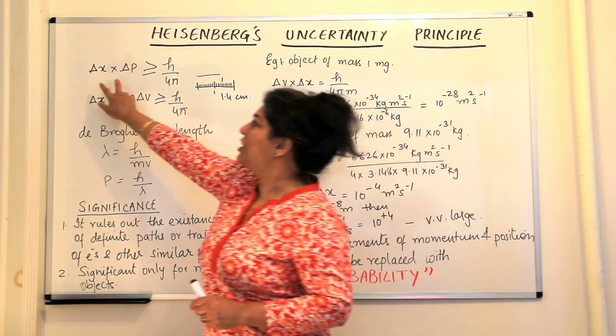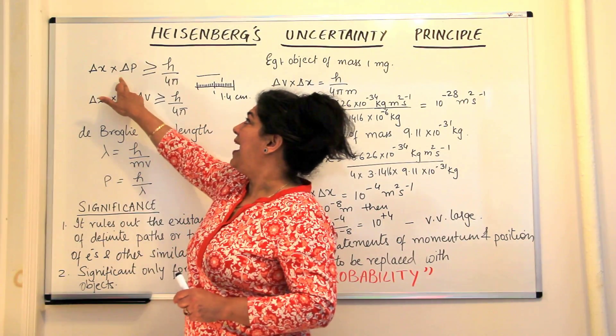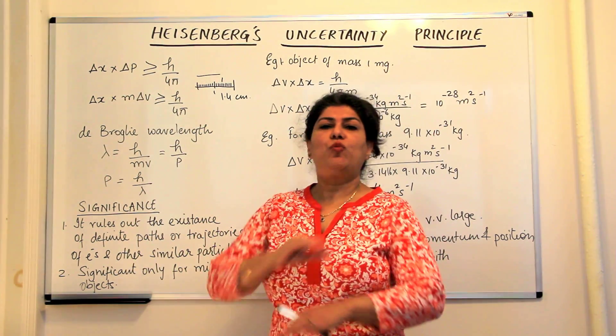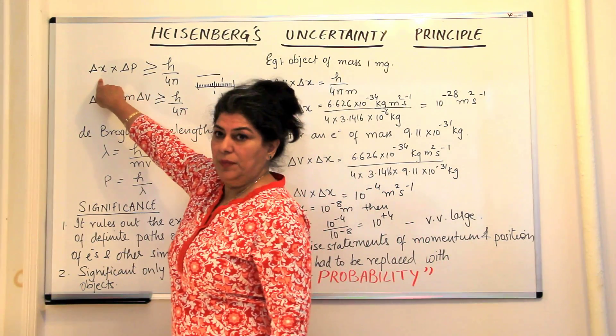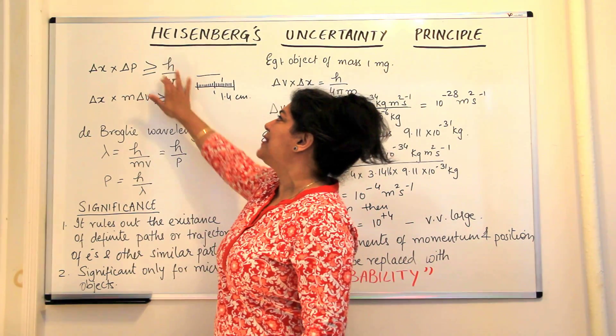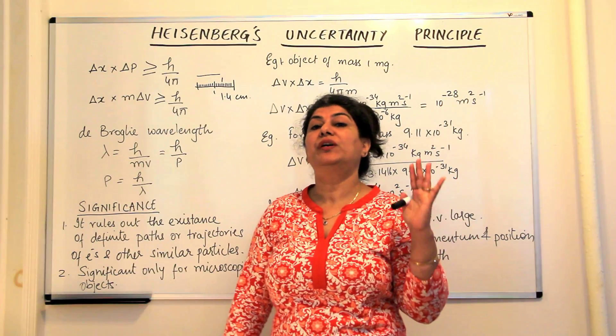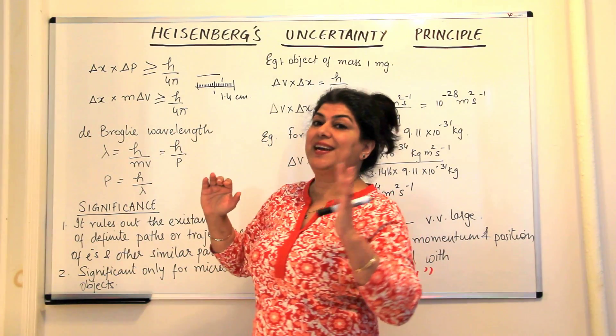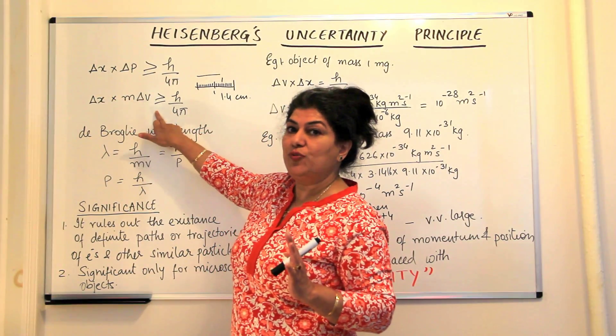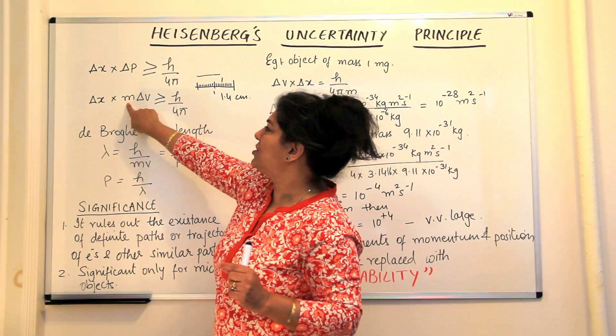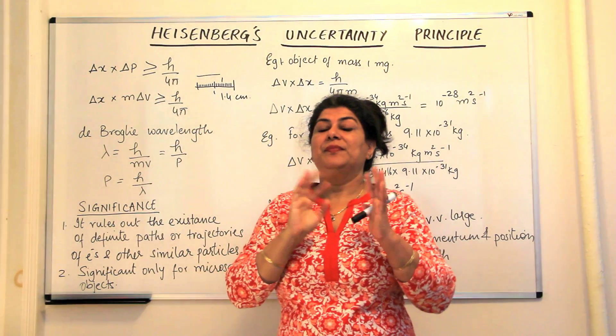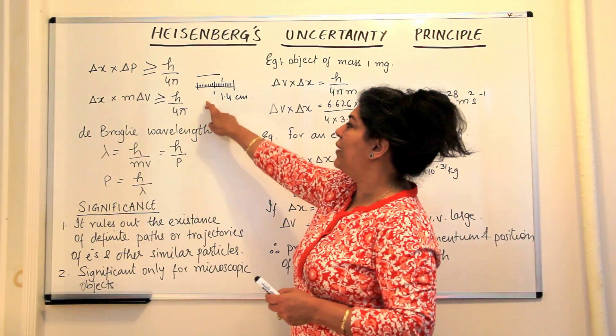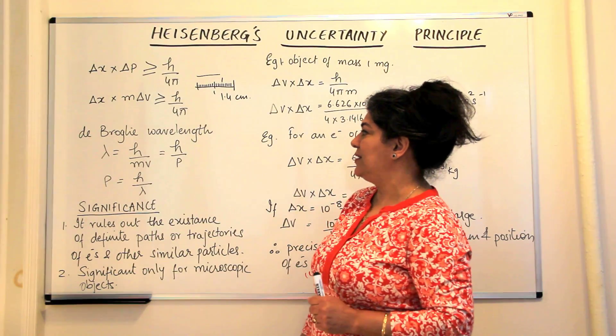He said the product of the uncertainty in position, which is Δx, and the uncertainty in momentum, which is Δp, is always greater than h upon 4π. Or whatever measurements you make, you will always have an error which is greater than h over 4π. Now, Δx is the difference in position, that is the error in position, and momentum is mass into velocity. Mass of an object does not change, therefore the mass comes out and it's the uncertainty in velocity. So this can also be written as Δx into m Δv should be greater than or equal to h upon 4π. This was Heisenberg's Uncertainty Principle.